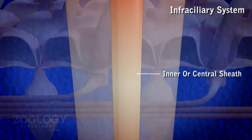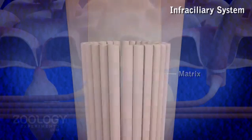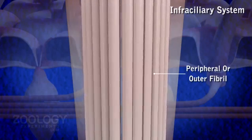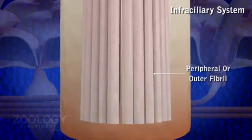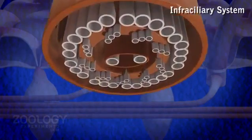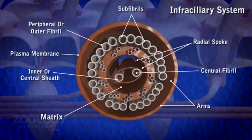Kinetodesmata. Associated closely with basal body of cilia and lying in the ectoplasm is a system of specialized striated fibrils called kinetodesmal fibrils. A single fibril arises from the basal body of each cilium and runs anteriorly, somewhat tapering along the course.